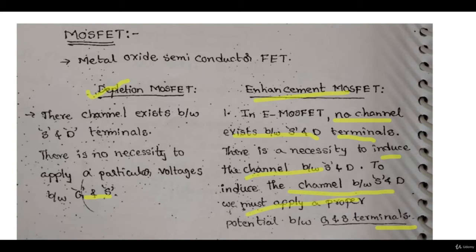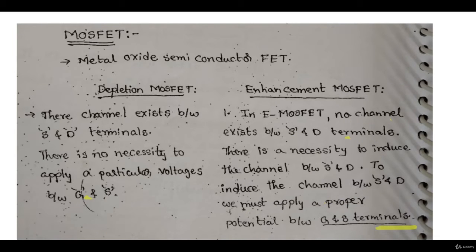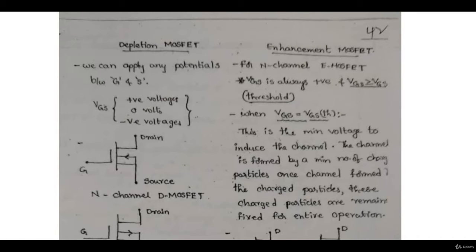A second difference is that in the depletion case, VGS can be applied in both directions — positive and negative — whereas in the enhancement case, for N-type you can only provide positive VGS, and for P-type you can only provide negative VGS. The major difference remains: enhancement type has no channel until you induce it, while depletion type already has a channel made by the manufacturer.